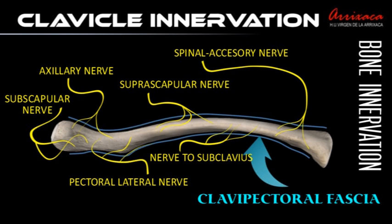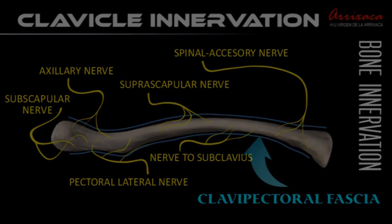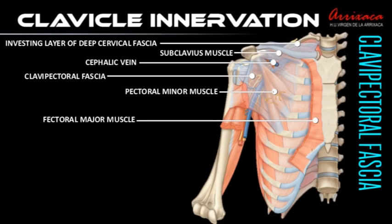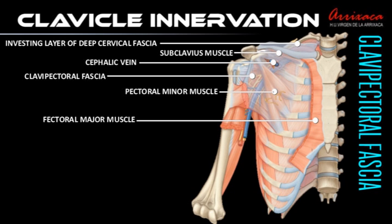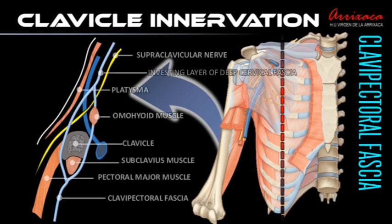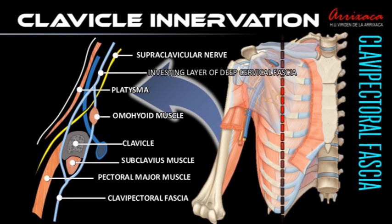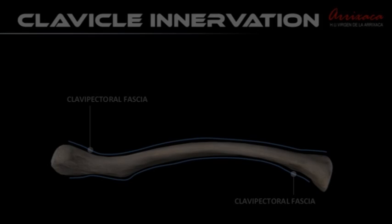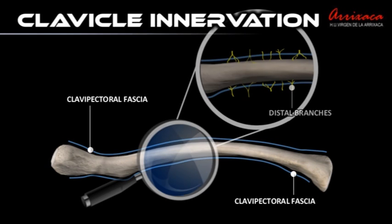The clavipectoral fascia is a strong fascial plane situated on the cover of the clavicular portion of the pectoralis major. It occupies the interval between the pectoralis minor and subclavius, enclosing both muscles within two layers. At the top level, both layers of the clavipectoral fascia are attached to the clavicle, forming a circular structure surrounding the entire clavicle.